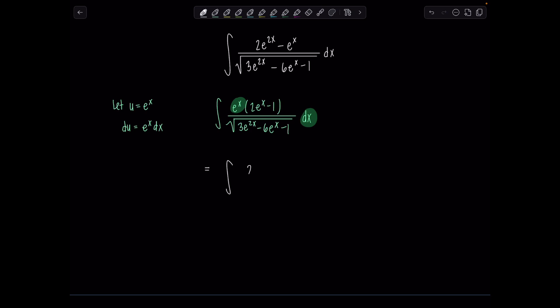Everything else I can rewrite in terms of u pretty easily. So now we have integral 2u minus 1 over square root 3. Remember, e to the 2x is e to the x squared, so that would be 3u squared minus 6u minus 1 du. Now I'm looking, since I have 3u squared minus 6u minus 1 in the denominator, I'm going to try to complete the square.